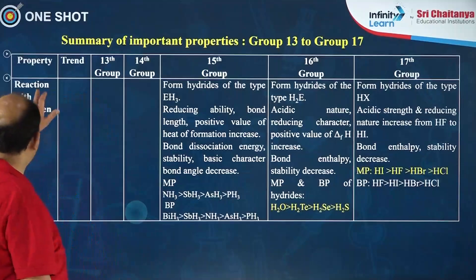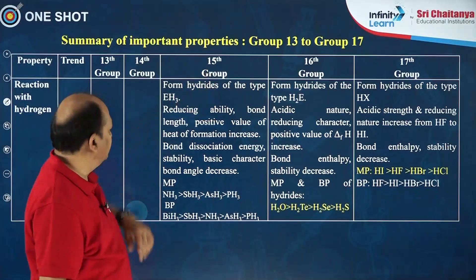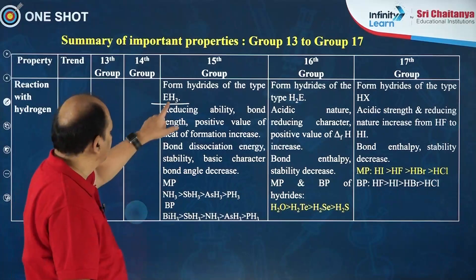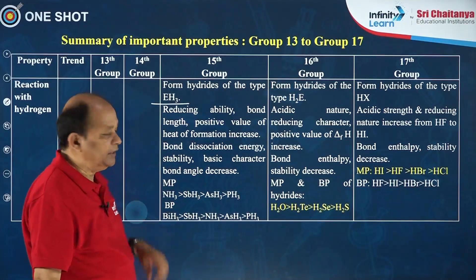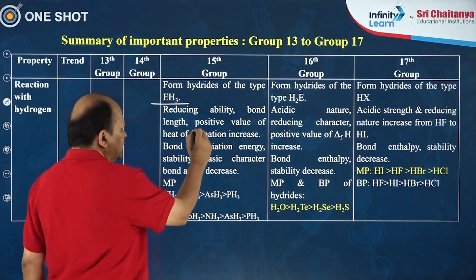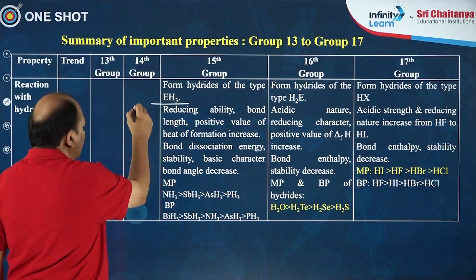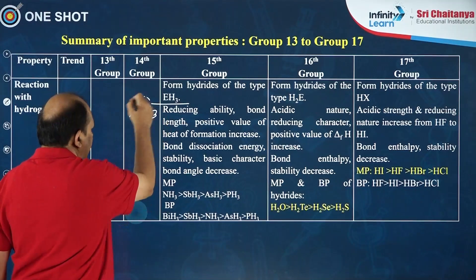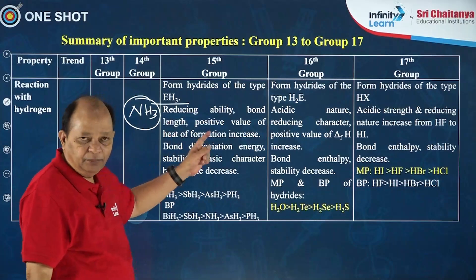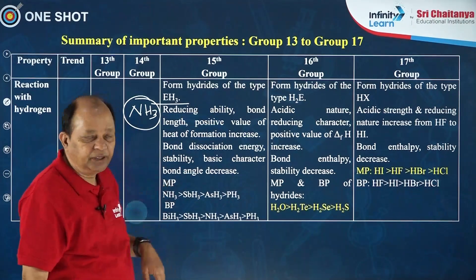The next property is reaction with hydrogen. For group 15 elements, they form hydrides of the type EH3, where E is the group 15 element. Here, the reducing ability, bonding ability, bond length, and positive value of heat of formation all increase. Ammonia is the compound which has a negative heat of formation — that is, it is an exothermic compound — while all others are endothermic compounds.